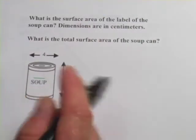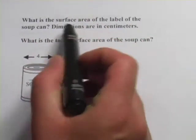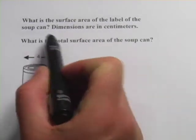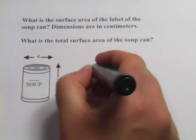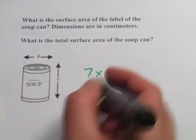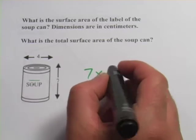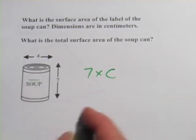So for this part of the soup can, and that's actually the first question, what is the surface area of the label of the soup can? We have to do this seven times, so that's the length or the width. And then the length would be the circumference of this circle. So seven times, I'm just going to put C for circumference.